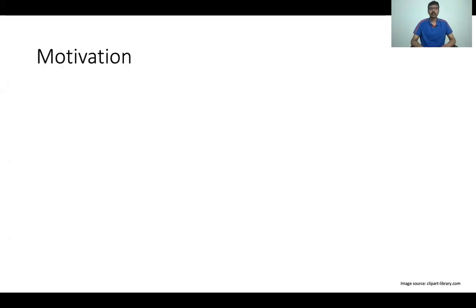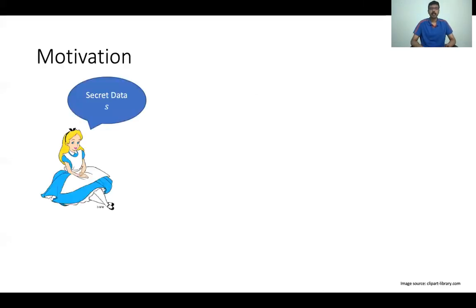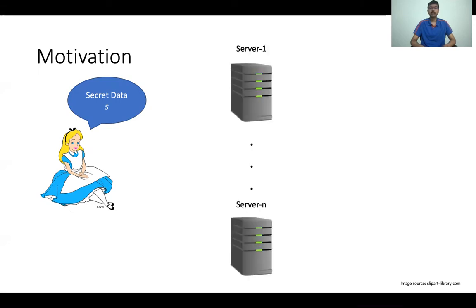Let's consider the following scenario. Alice has some secret data, and she wishes to store this data on the cloud. To enhance privacy, Alice chooses n cloud service providers, secret shares the data using a t-out-of-n secret sharing scheme, and stores the shares on the servers.